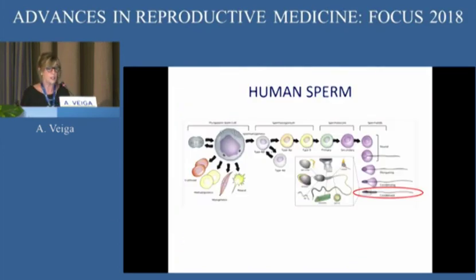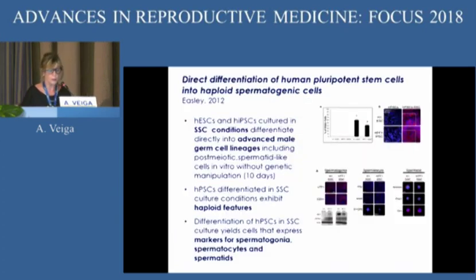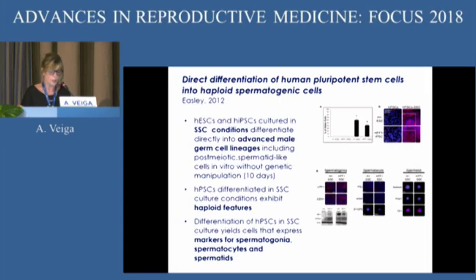Much less work has been done in the human for obvious reasons. There is one relevant paper from 2012 showing directed differentiation of human pluripotent stem cells into haploid spermatogenic cells. However, these cells only showed markers of spermatogonia, spermatocyte, and spermatid — they did not attempt to fertilize any egg with them, for reasons that are obvious.